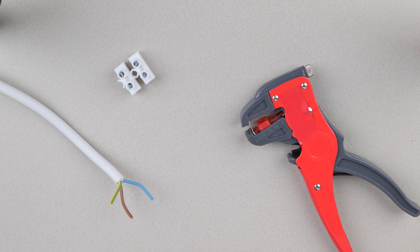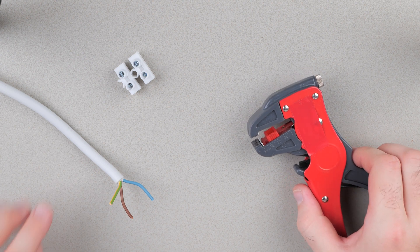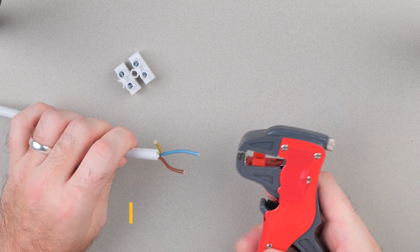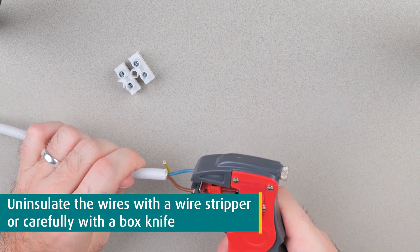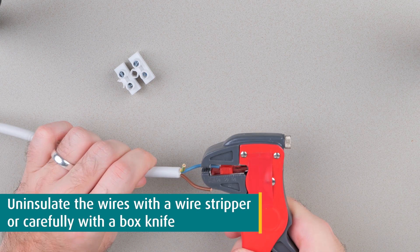The first thing you have to do is to remove the cable insulation to uncover the single wires. The easiest and safest way to do that is by using a cable stripper. If you don't have one, you could also use a box knife. Check out this video to learn how to remove the insulation with a knife.